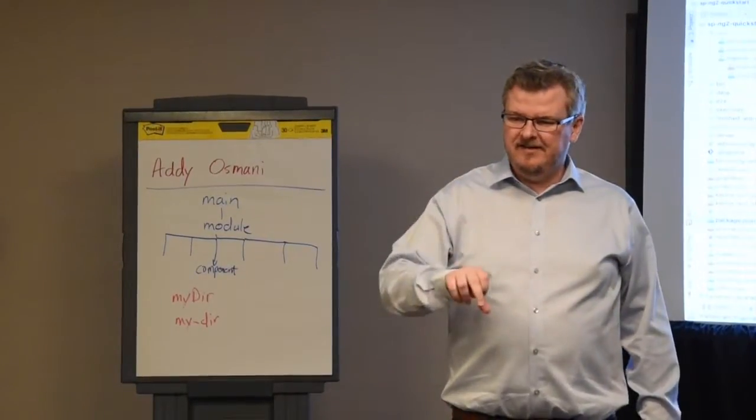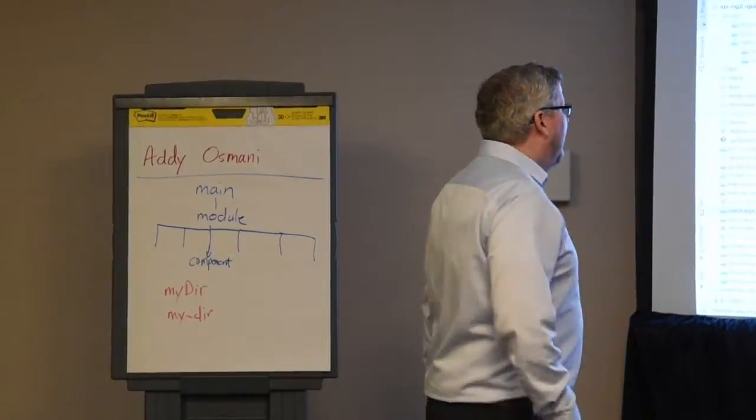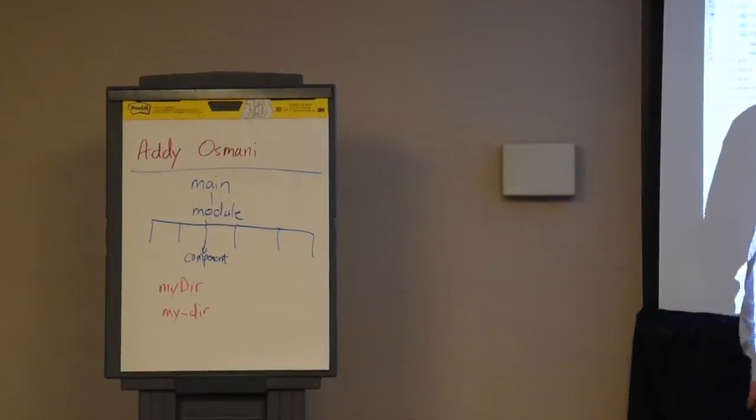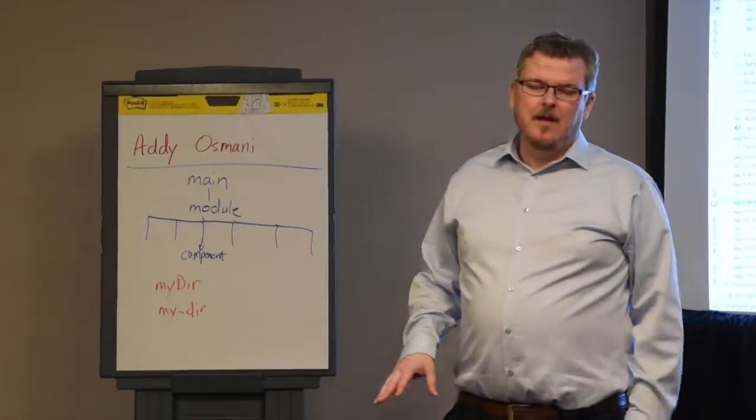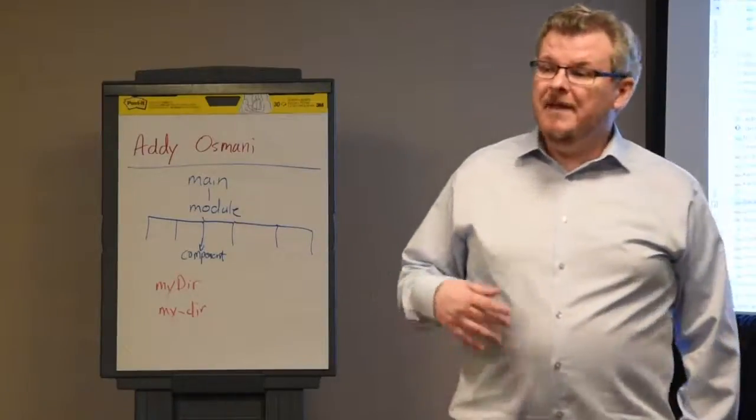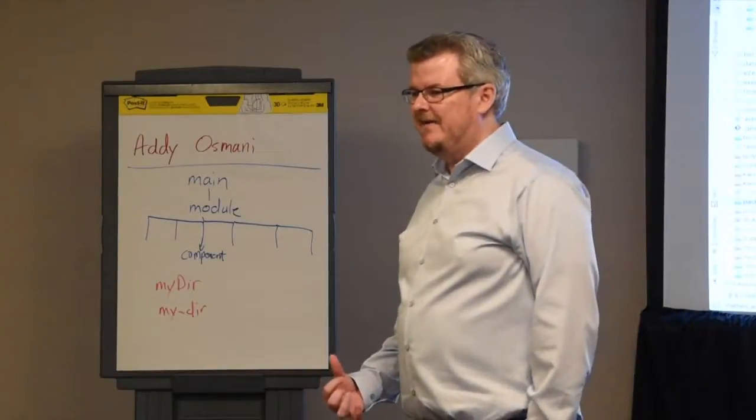A is the major version, B is the minor version, C is the patch level. So patch level, usually bug fixes, no breaking changes. Minor, maybe a bug fix, maybe the introduction of a new feature, but no breaking backwards compatibility.